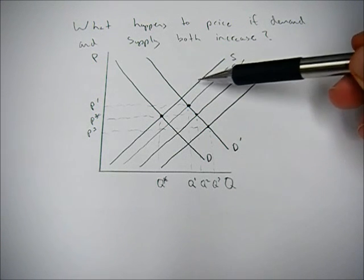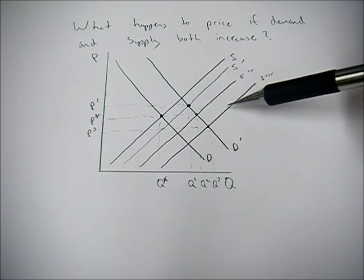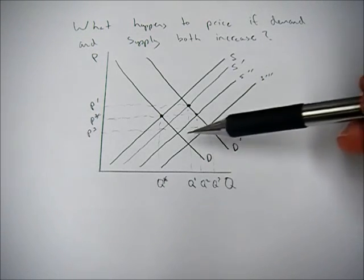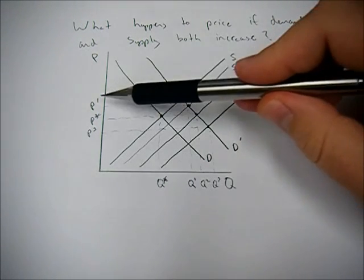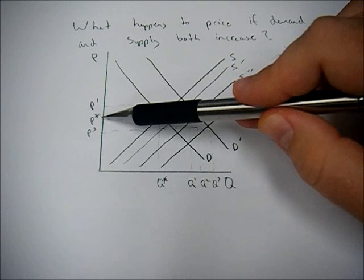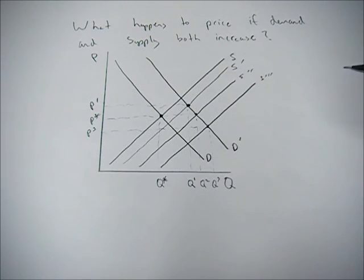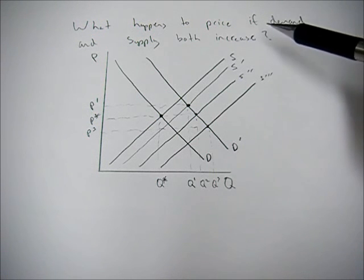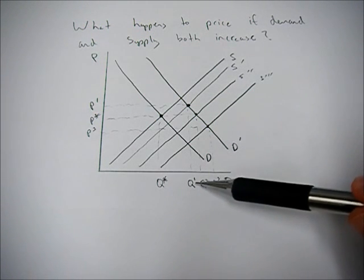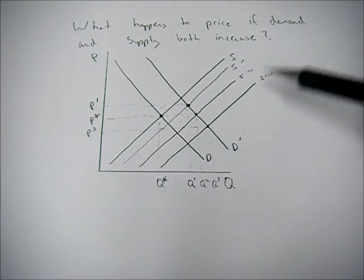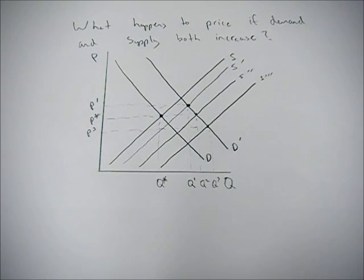And in this example, I've shown you what happens if we vary supply, but we could easily do it the other way and vary demand. So you could get an increase in price, it could remain the same, or it could decrease. We don't know without more information. But what we do know is that equilibrium quantity will increase if both demand and supply increase.